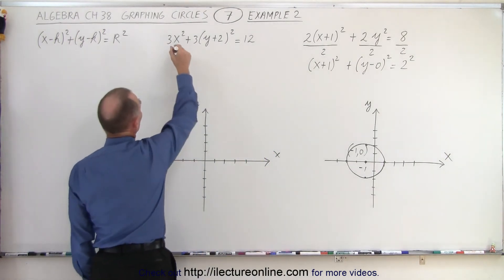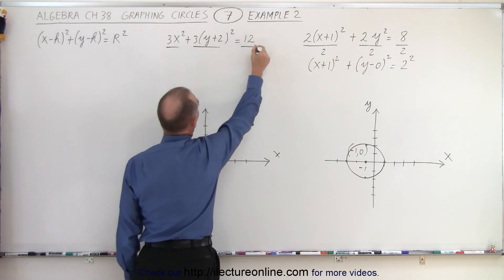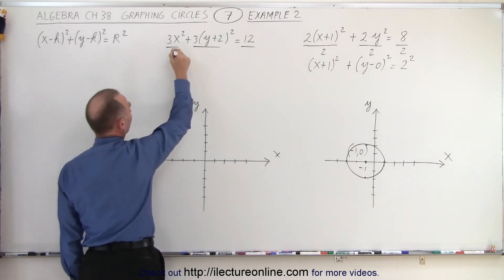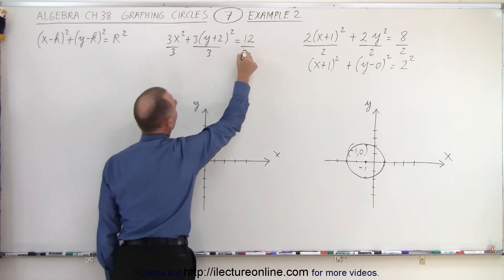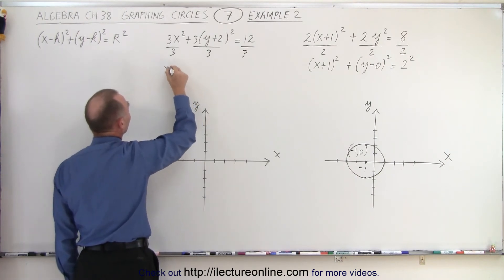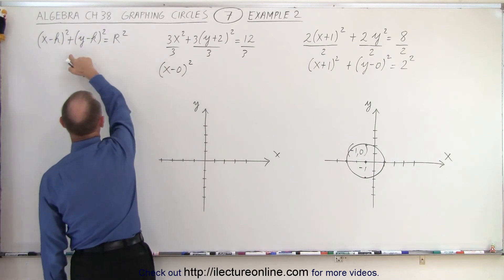We do the same over here. Again we want to get rid of the coefficient, we divide both sides of the equation by 3. So here we end up with, and again we can write (x-0)² instead of just x² so we can see that this is the form.